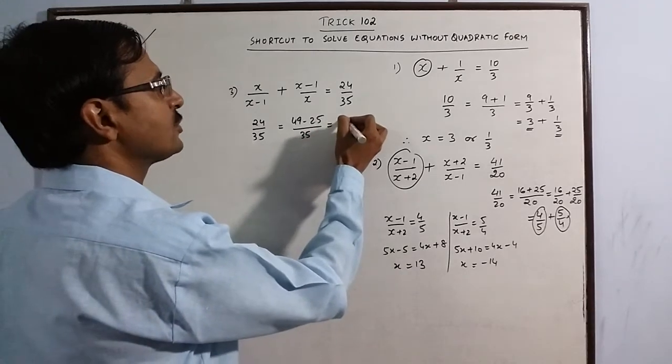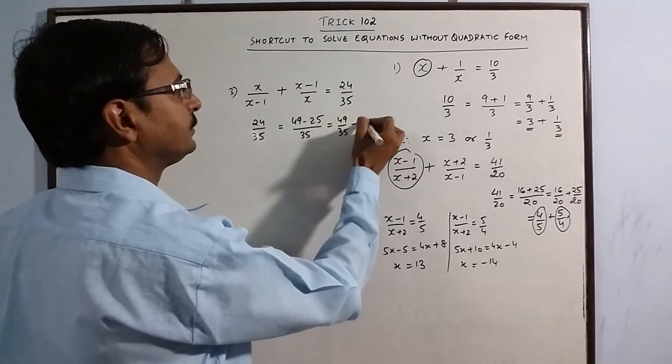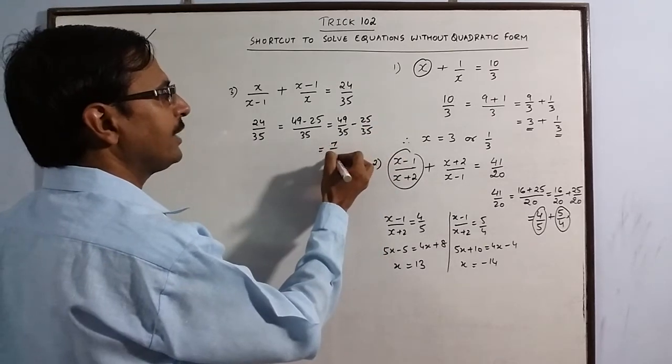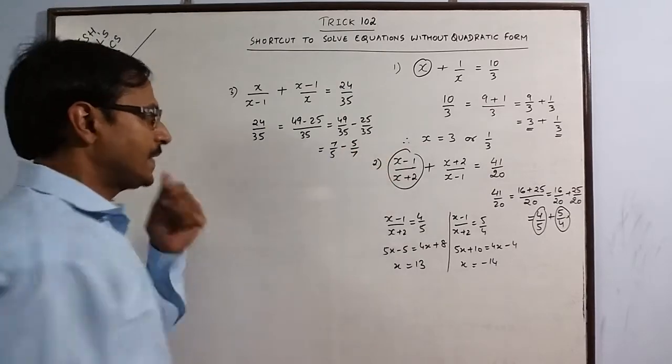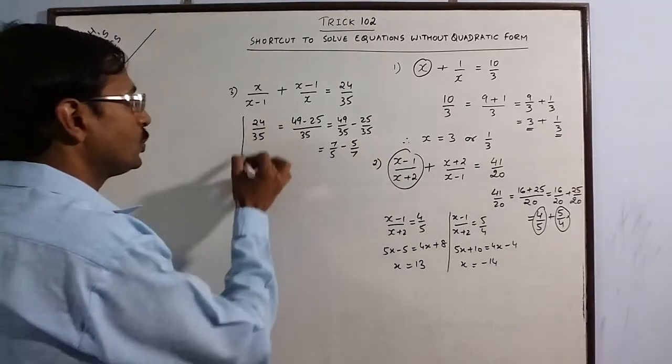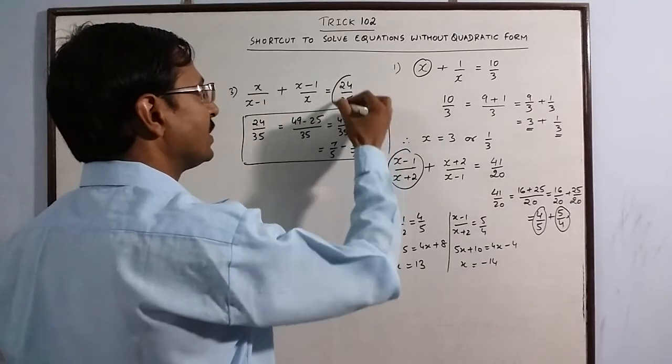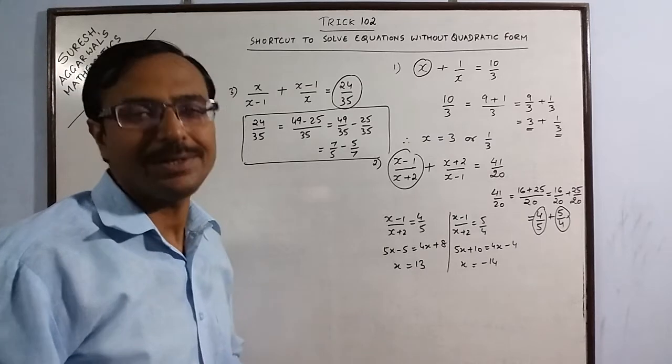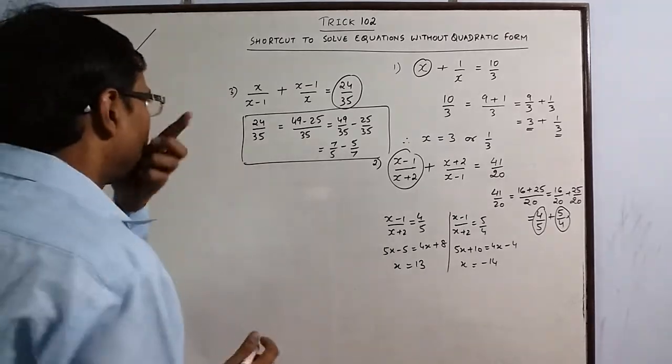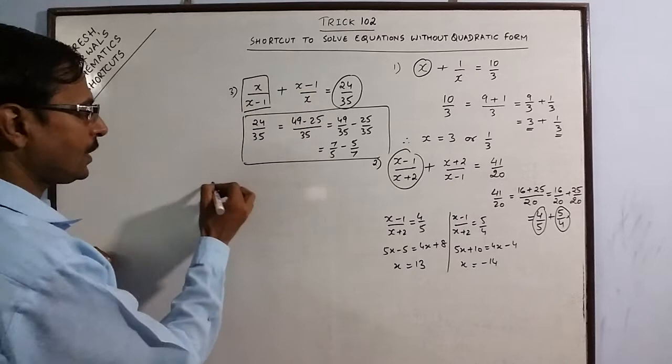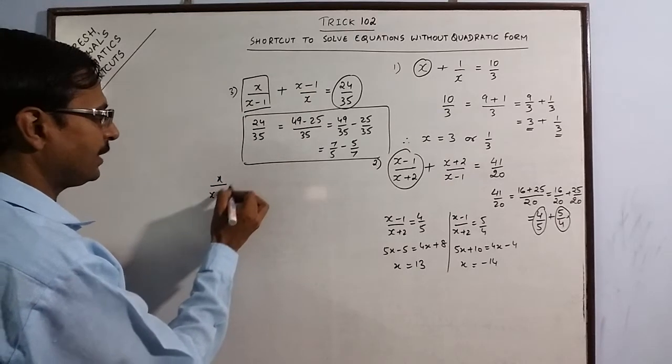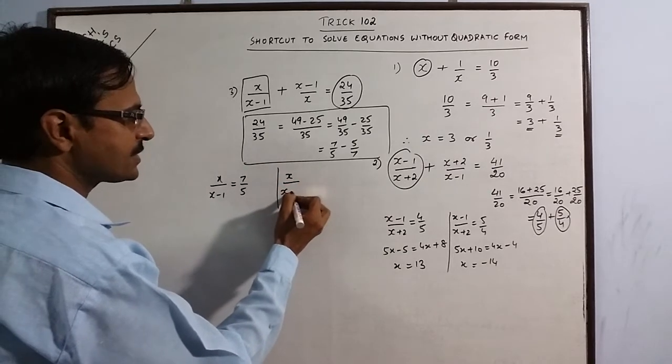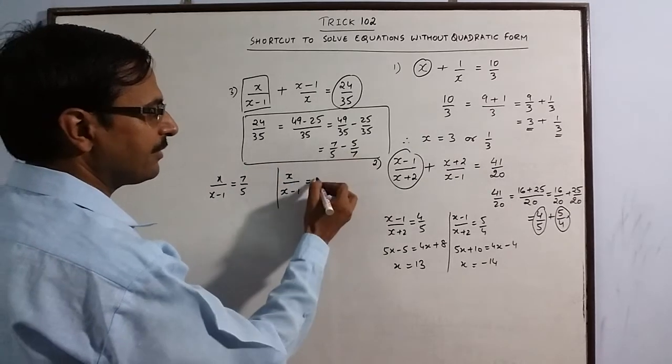Now, the process is same. If you split the denominator, this will come out to be 7 upon 5 minus 5 upon 7. The trick is to have this RHS broken down into two terms which are reciprocal of each other. Now, take the first term here, x upon x minus 1 and put it equal to 7 upon 5. And in the second case, take the first term and put it equal to second term. This time, we have a negative. So, we have to take the negative sign also together with that.